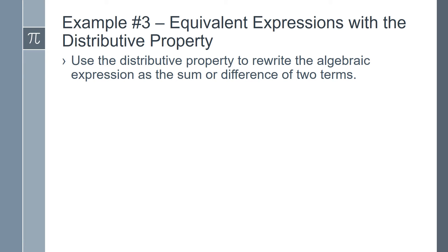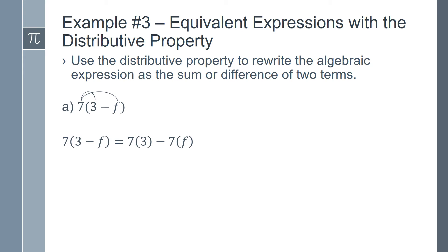Example number 3: Writing equivalent expressions with the distributive property. We will use the distributive property to rewrite the algebraic expression as the sum or difference of two terms. We'll start with part a: 7 times (3 minus f). We will multiply 7 times 3 and 7 times f. So 7 times (3 minus f) becomes 7 times 3 minus 7 times f, which equals 21 minus 7f.